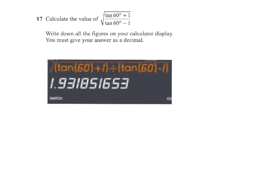We're going to calculate the value of the square root of tan 60 degrees plus 1 over tan 60 degrees minus 1. Write down all the figures on the calculator display and give the answer as a decimal.